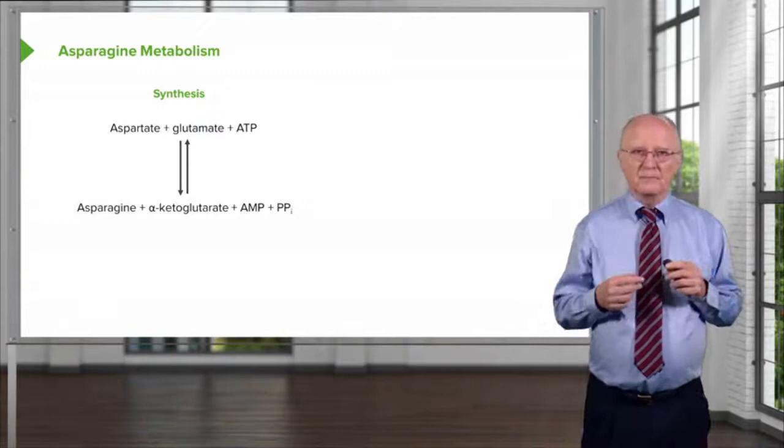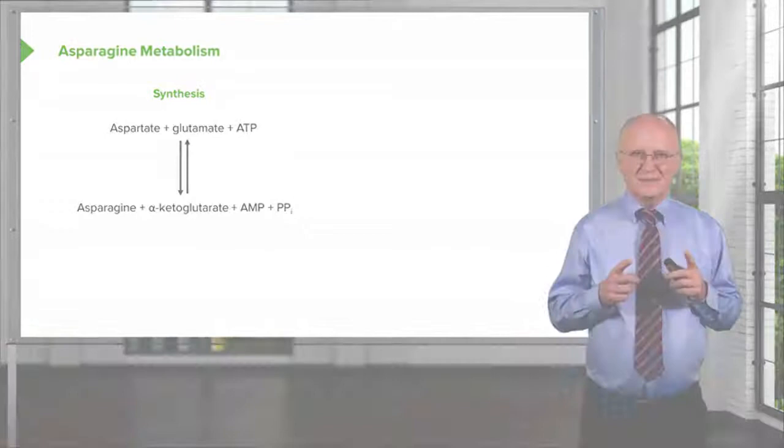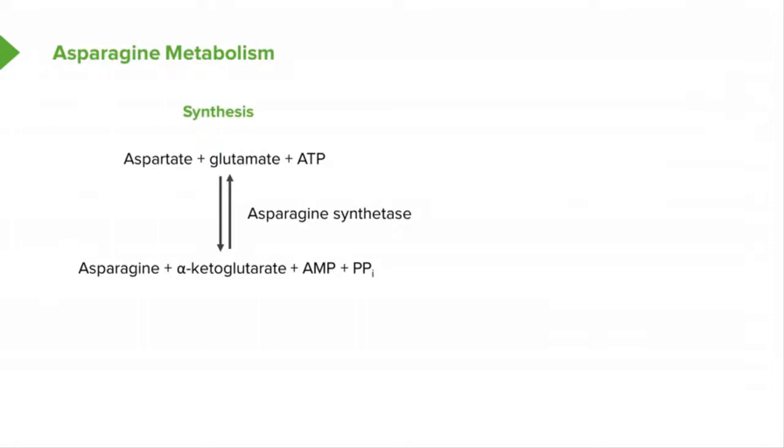And because that requires so much energy, we see ATP becoming AMP. When we see that happen, we know there's a lot of energy involved. When that happens, it means that this reaction, even though it's drawn in a reversible fashion, isn't very practical in the reverse direction. The enzyme catalyzing this reaction is asparagine synthetase. It's energetically costly and essentially not reversible.